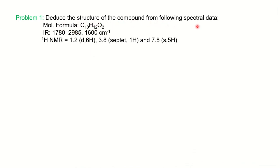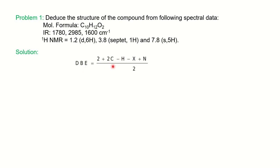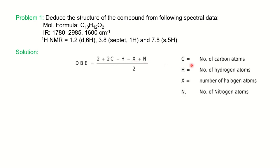Deduce the structure of the compound from the following spectral data. The molecular formula is given, along with IR and proton NMR data. The first step to solve such a problem is, if the molecular formula is mentioned, find the DBE — that is, double bond equivalence — to find the number of unsaturations present. The formula is: DBE = (2 + 2C − H − X + N) / 2, where C is carbons, H is hydrogens, X is halogens, and N is nitrogens. Our molecular formula is C10H12O2.